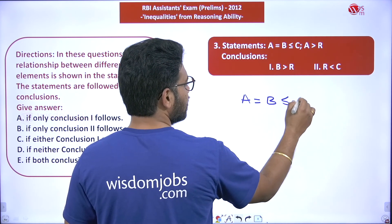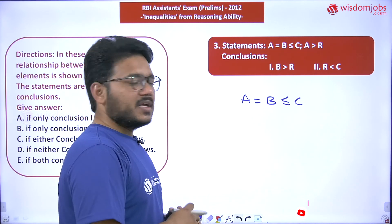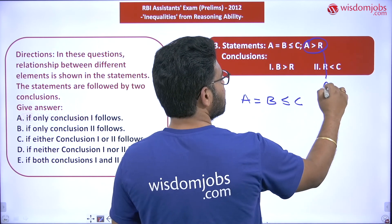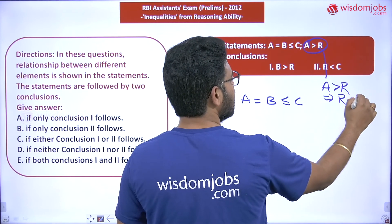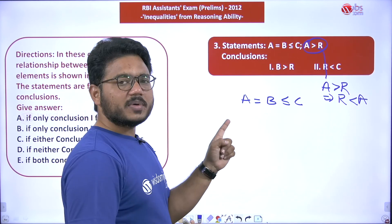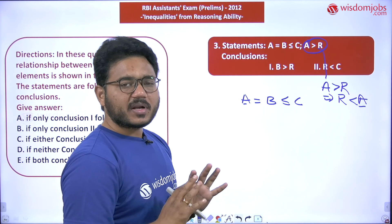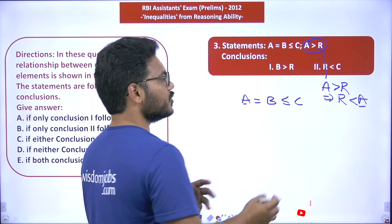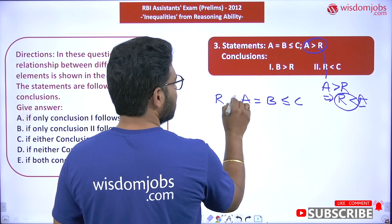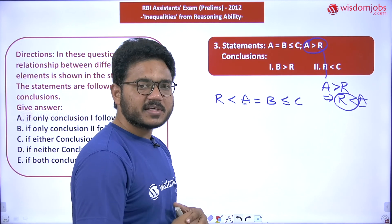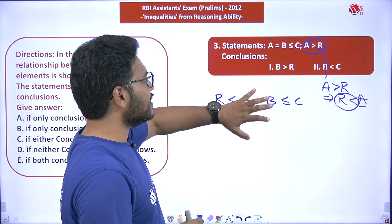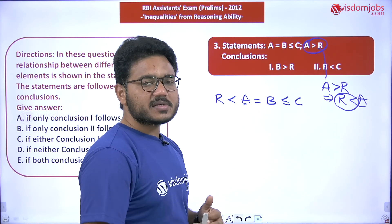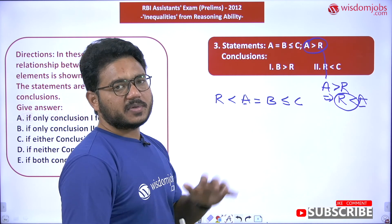Now observe: I am rewriting the statements here. Statement one is A ≤ B ≤ C, and the other statement is A > R. These can be easily merged. Since A is the common element at one end, we can combine them into a single line: R < A ≤ B ≤ C. Once merged into this single statement, it becomes very easy to check whether the conclusions follow.